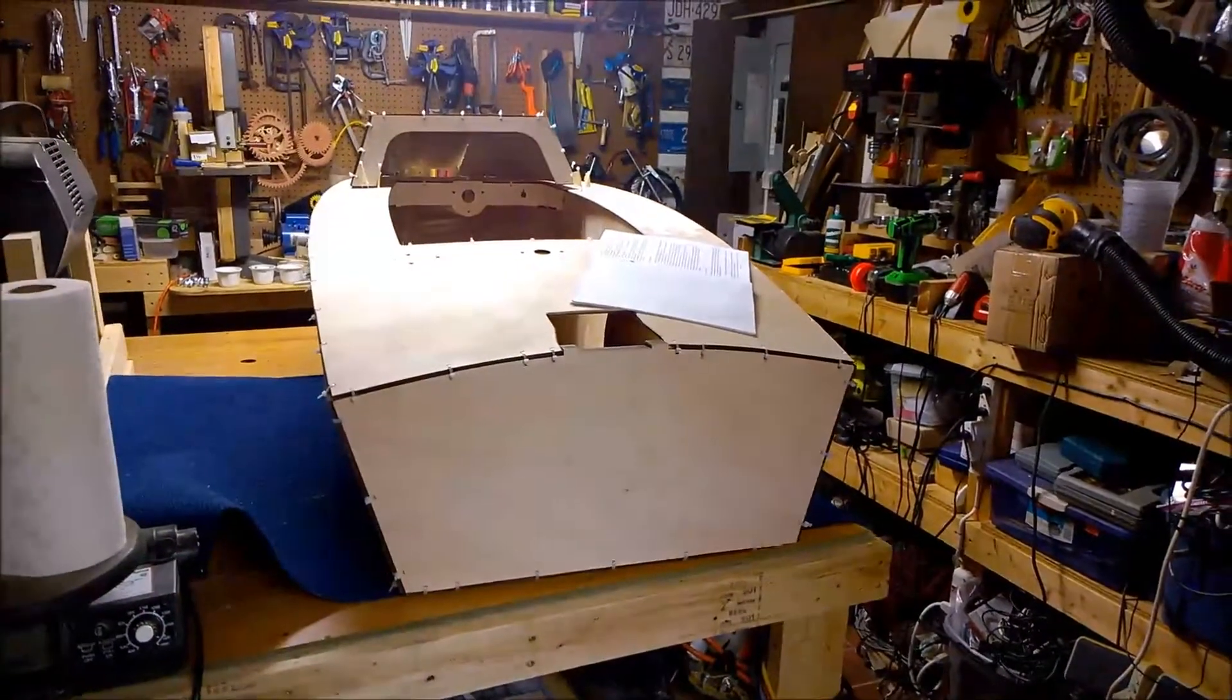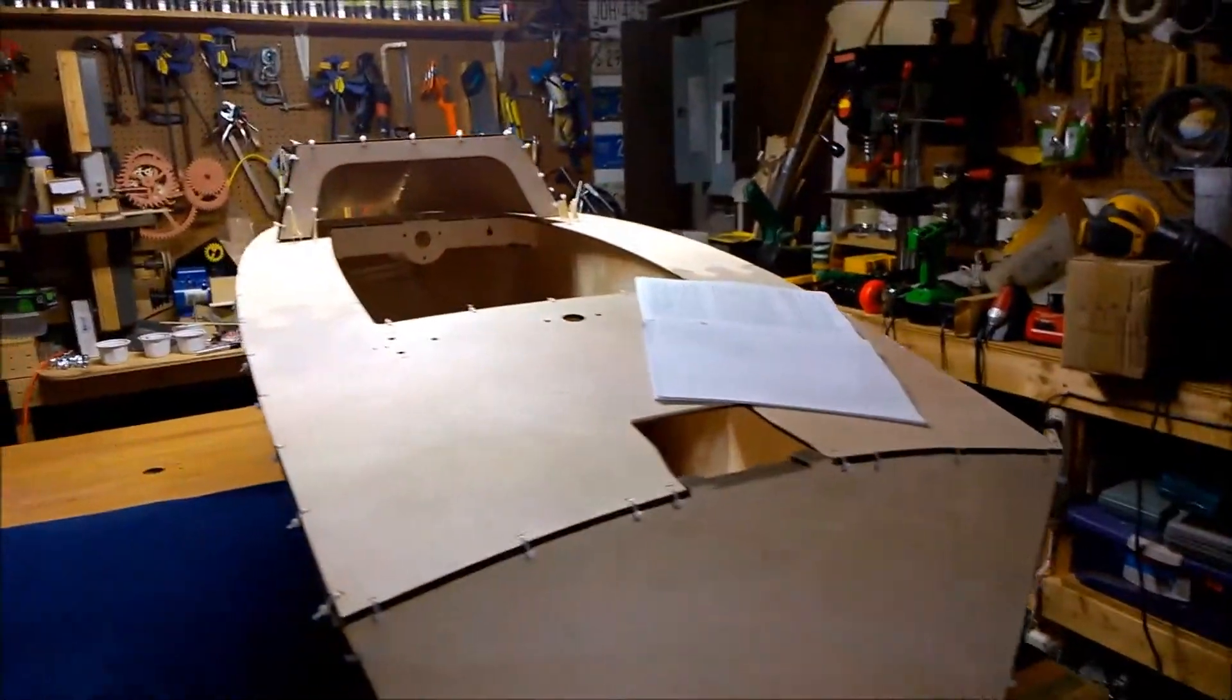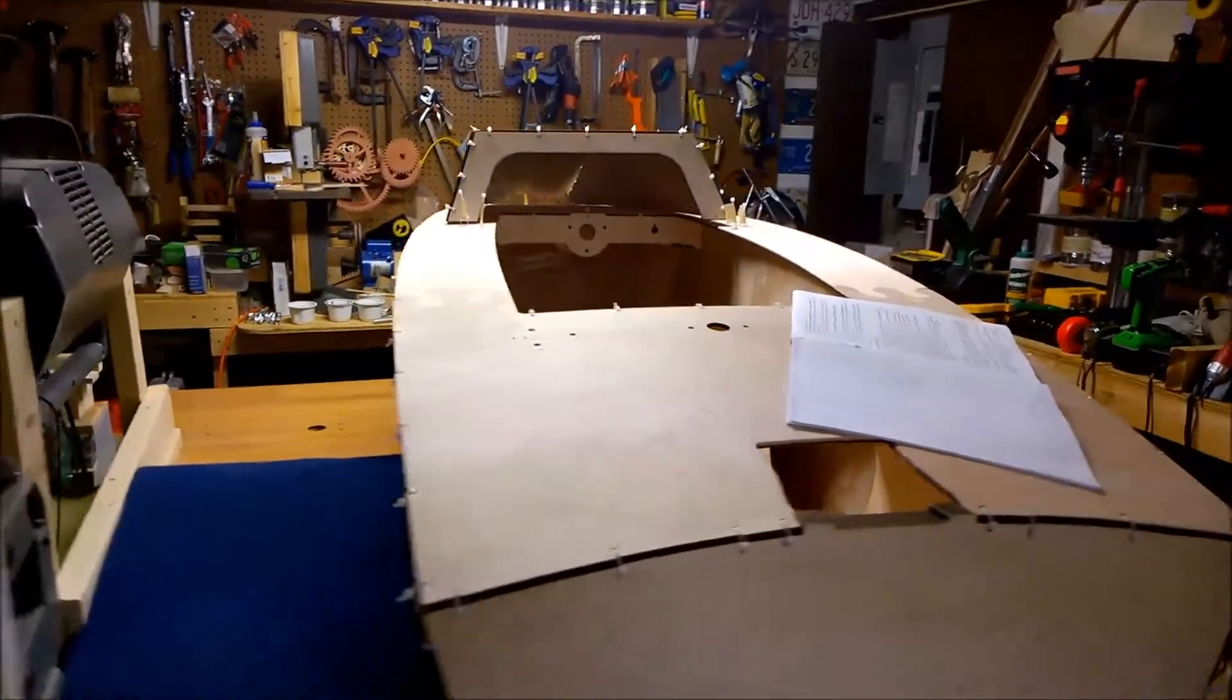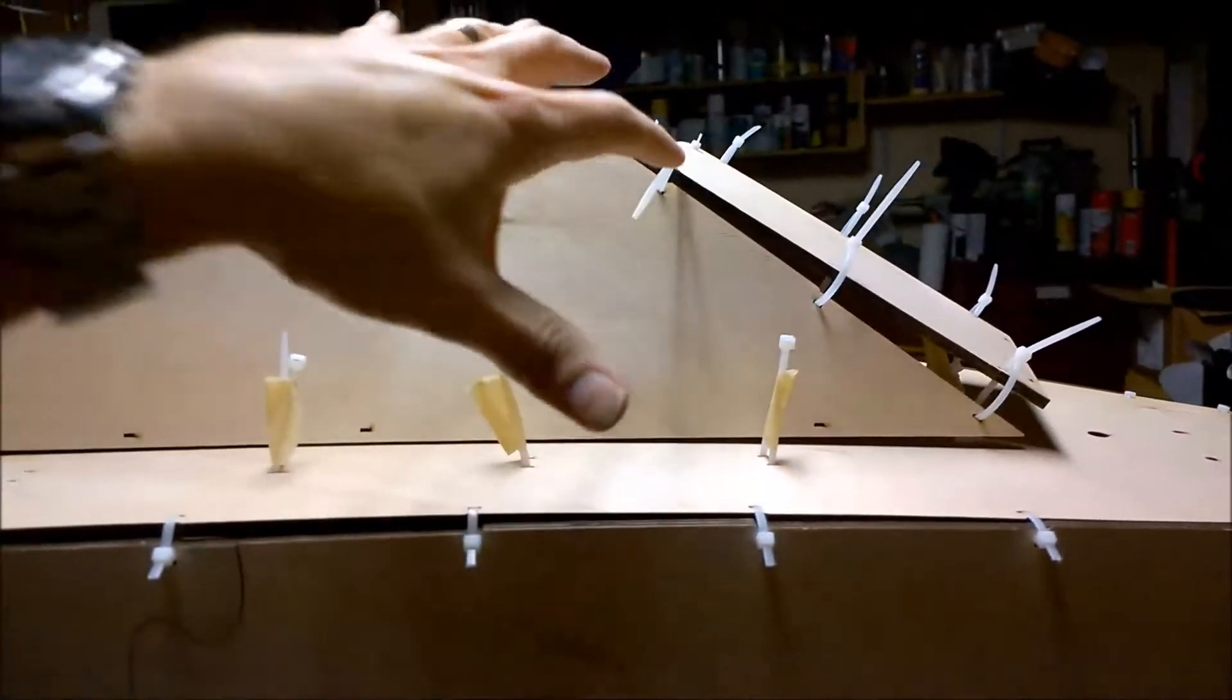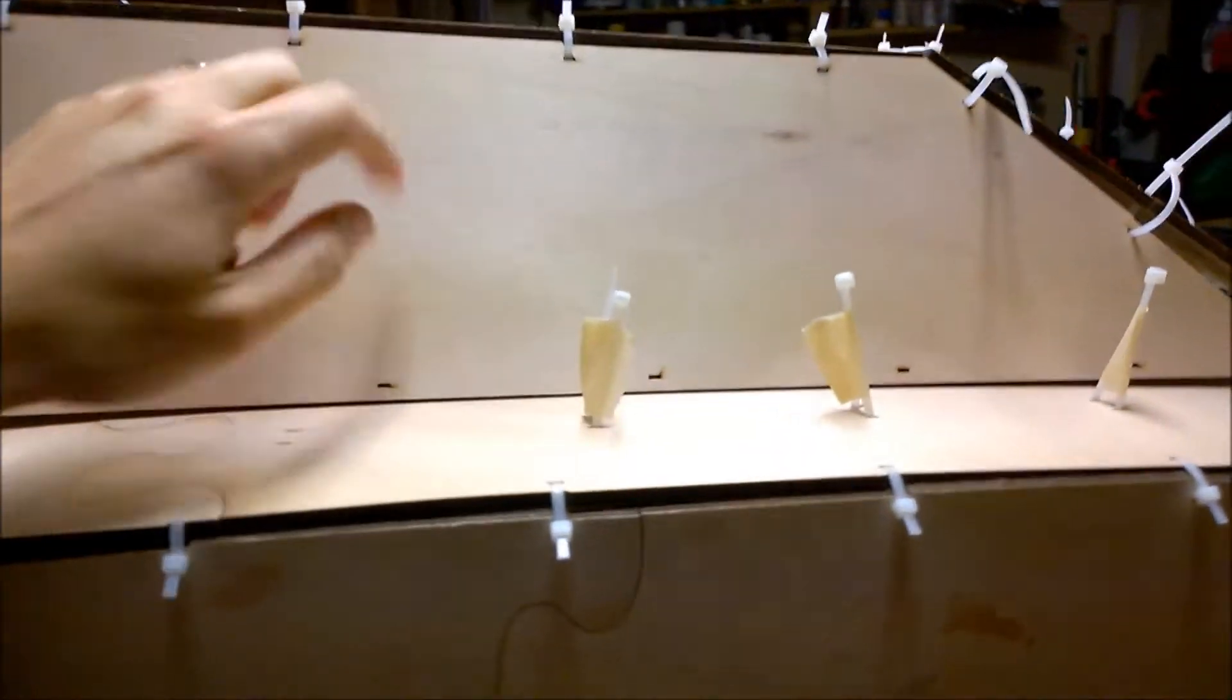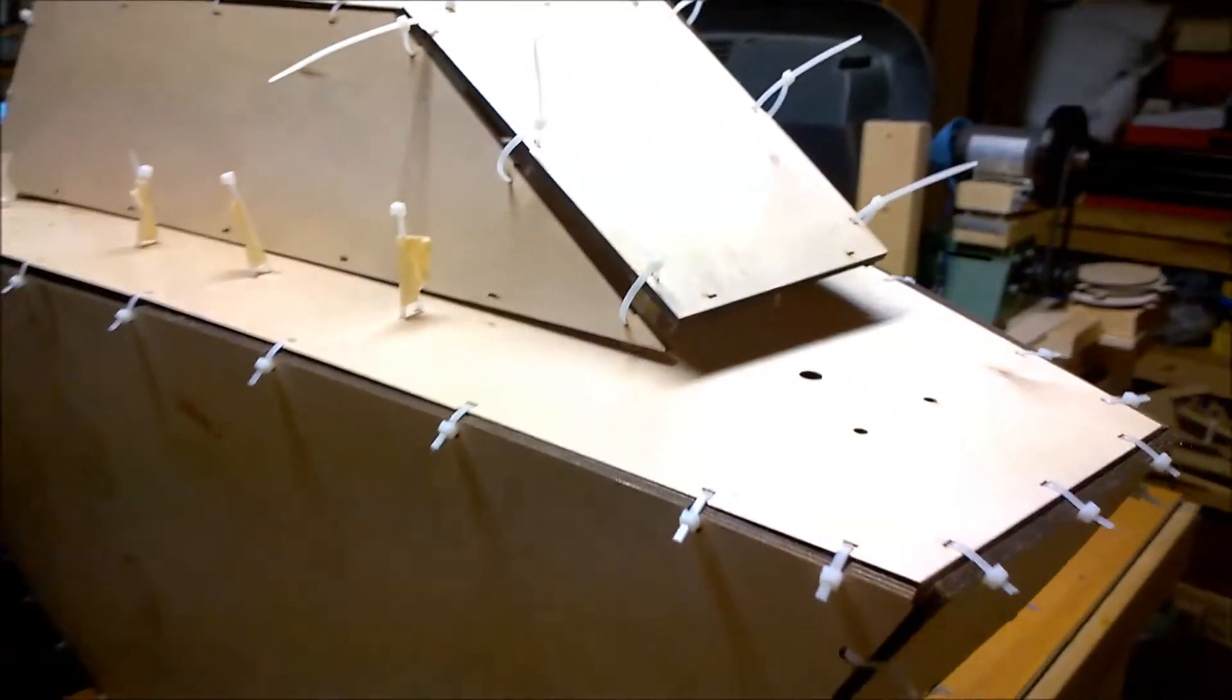Today we're going to start working on the epoxy fillets for the inside joints. I temporarily put the front cap and windshield on top just to visualize the way it looks. These are somewhat loosely attached so we still have some wiggle room when it comes time to attach that to the deck. I just wanted to play around and see how that looked.